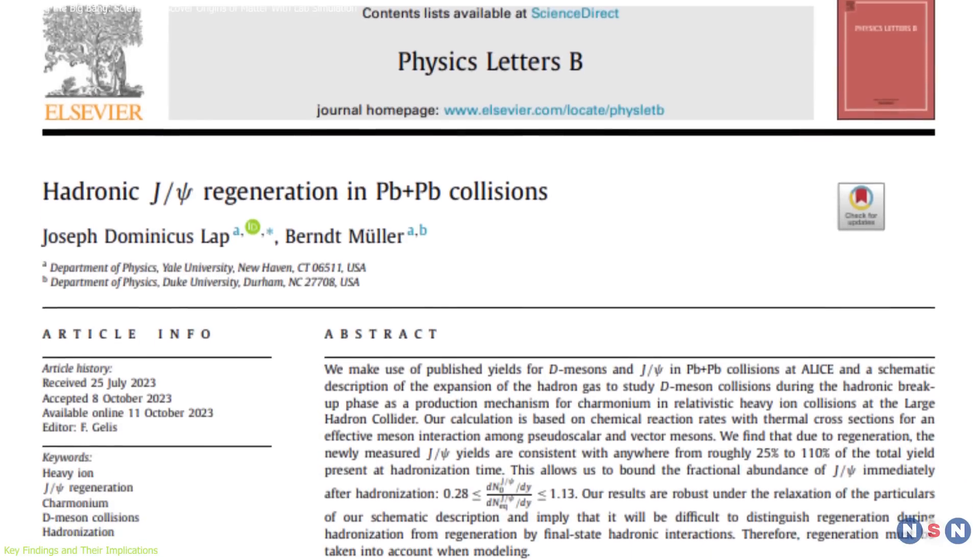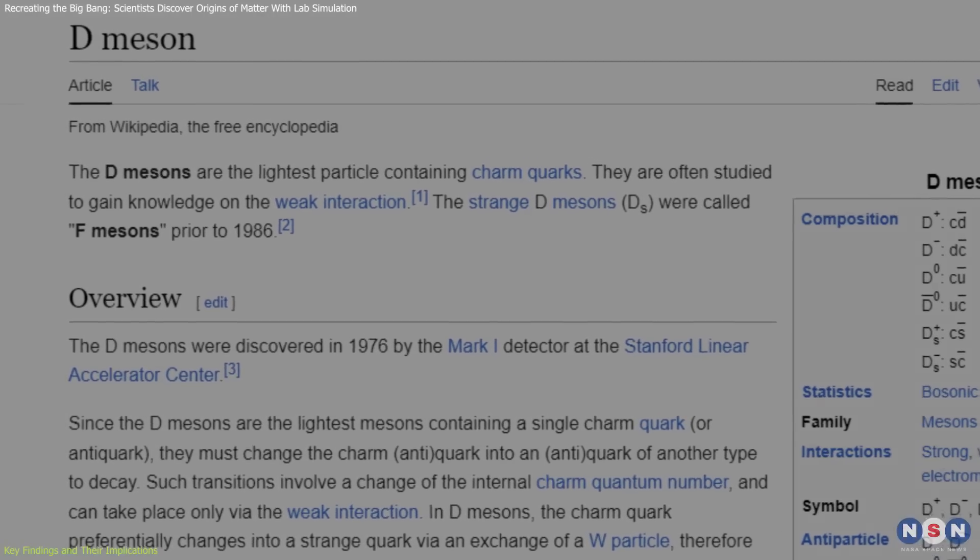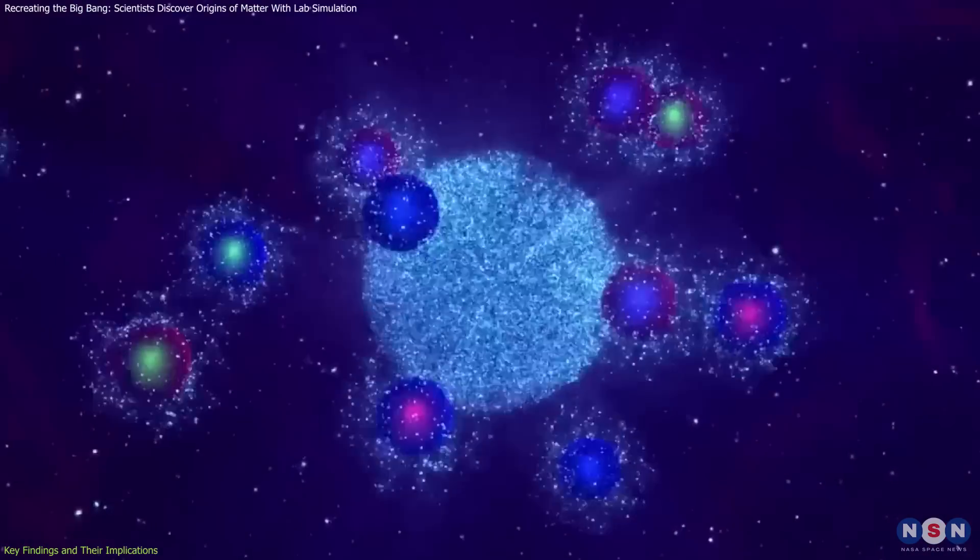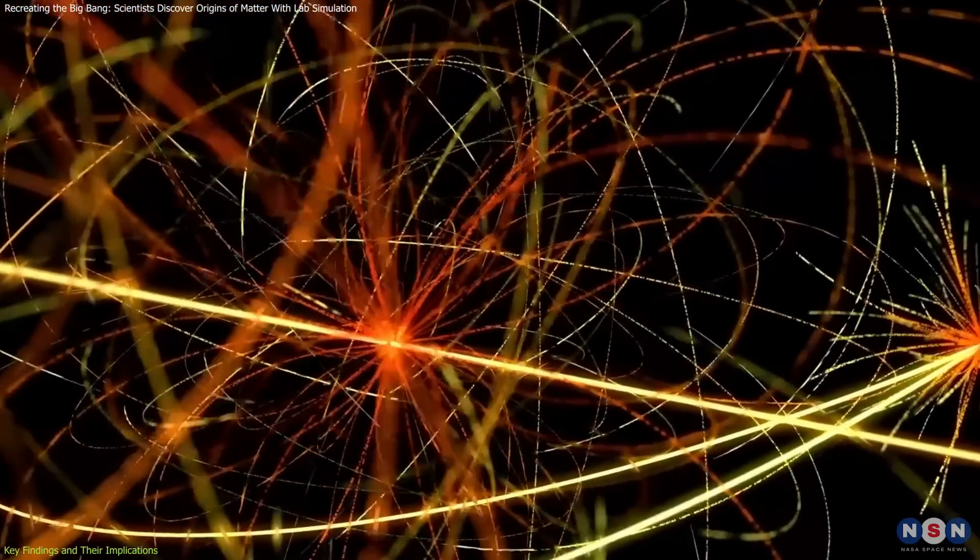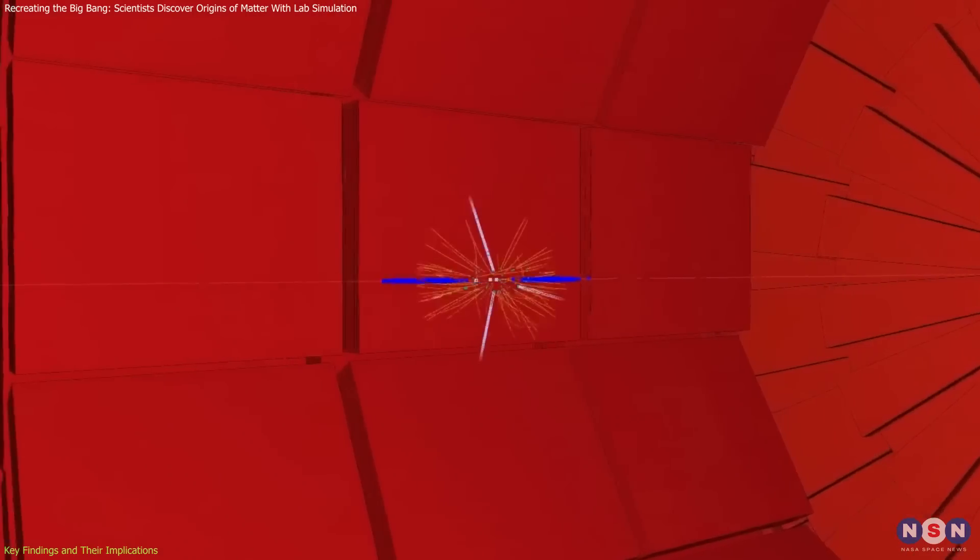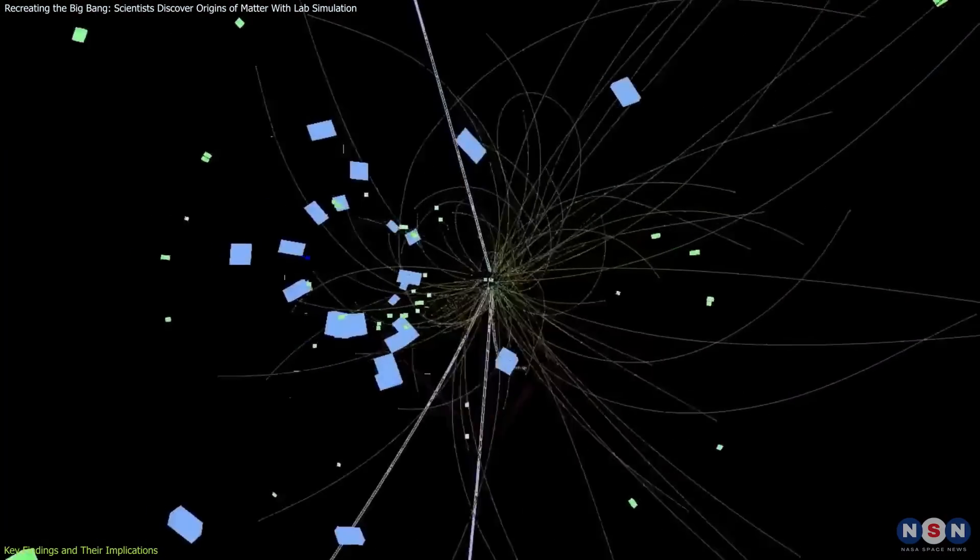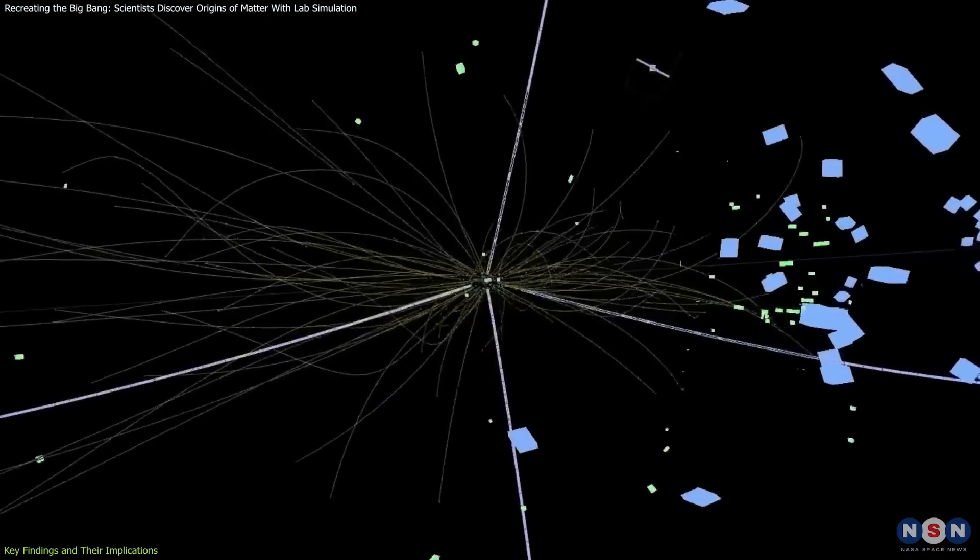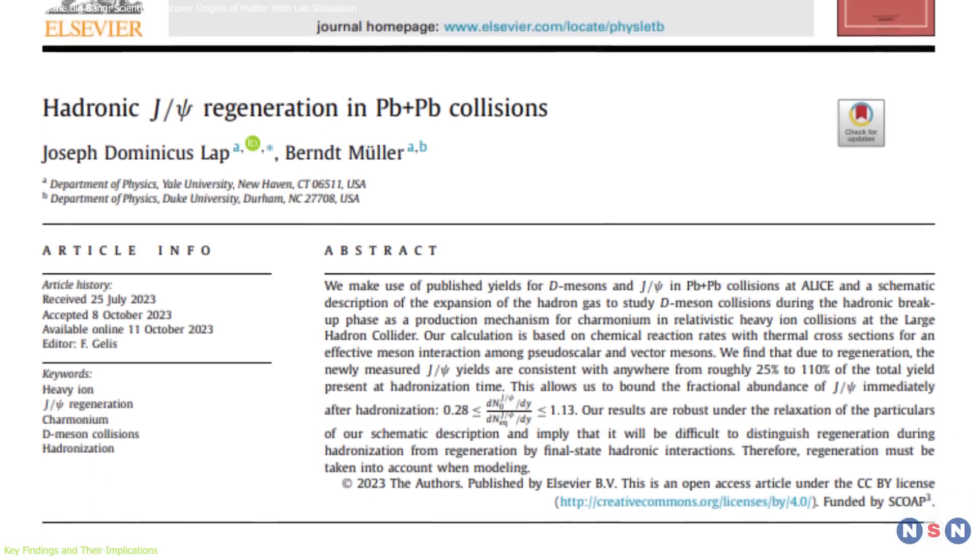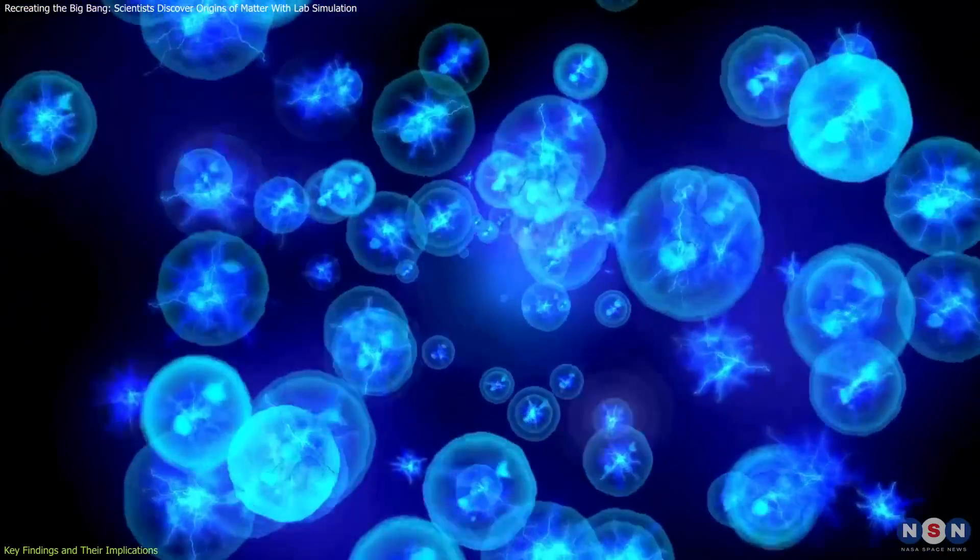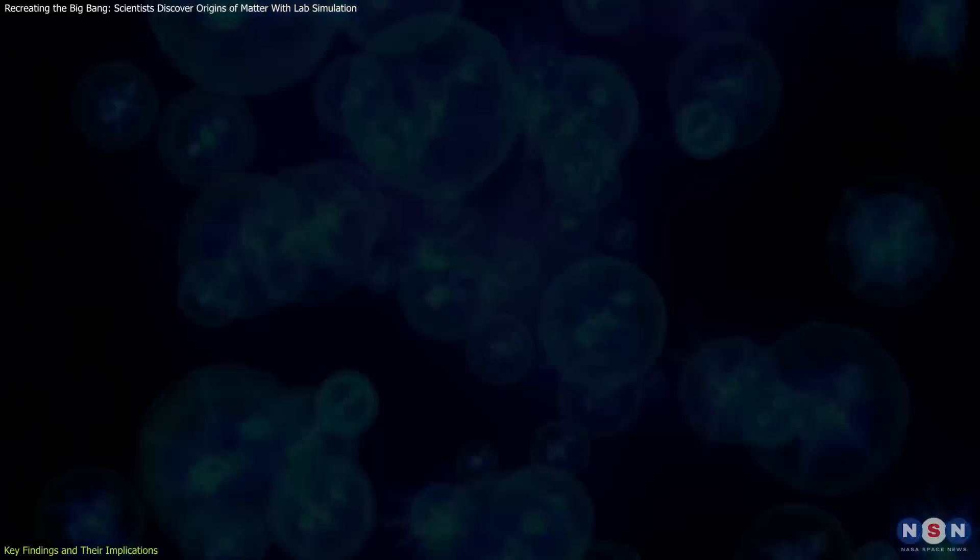These insights are particularly significant when considering the behavior of specific particles like demissons and their role in producing rarer particles such as charmonium. Historically, the interactions producing charmonium were not well understood due to its rarity. However, recent data indicate that more than 70% of the charmonium observed originates from interactions involving demissons, providing profound insights into the strong force.